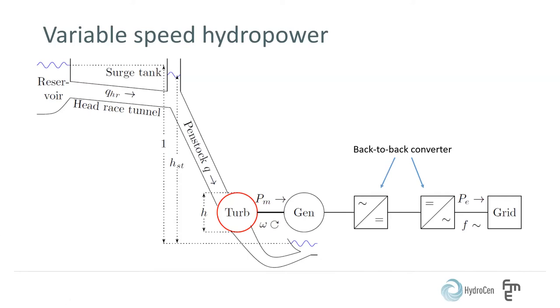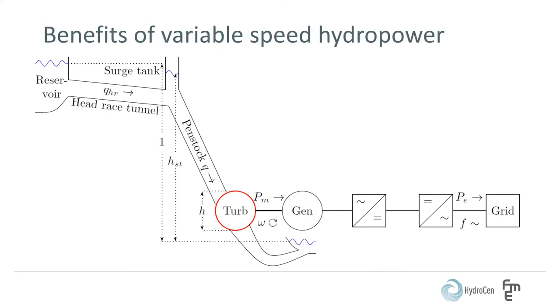Since we have utilized a conventional synchronous generator, we are able to bypass the converter if we want or need it. The main benefit of variable speed hydropower is that the turbine can achieve a higher efficiency when not operating at its best operation point, since the rotational speed can be changed.